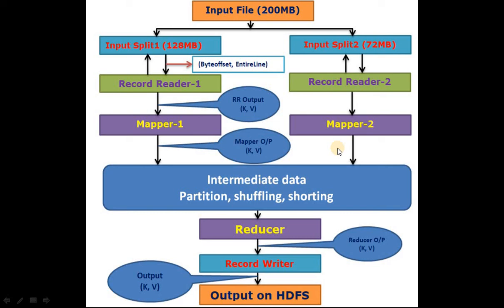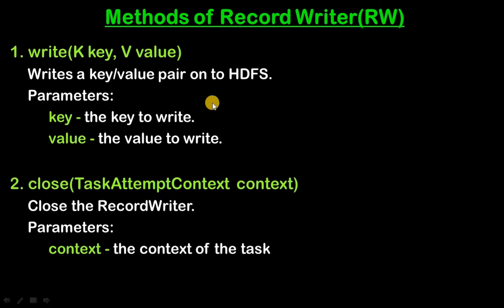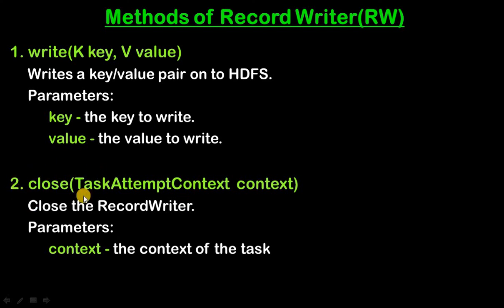Now let's look at the methods of Record Writer. Record Writer has two methods. The first is write, which writes a key-value pair onto HDFS, and its parameters are key and value. Since Record Writer is also an interface, these two methods are abstract and we need to override them. The second method is close, which closes the Record Writer and takes context — the context of the task — as a parameter.